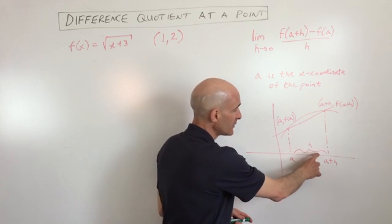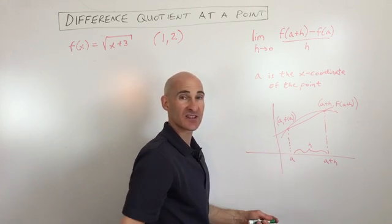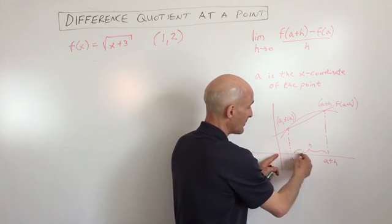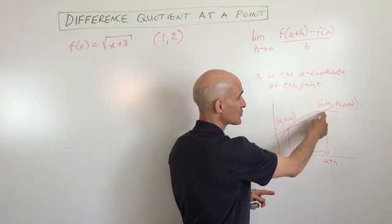And if you go just a little distance to the right, we'll call that distance h, so from the origin to here, this is a plus h, so that's the x coordinate of this point.